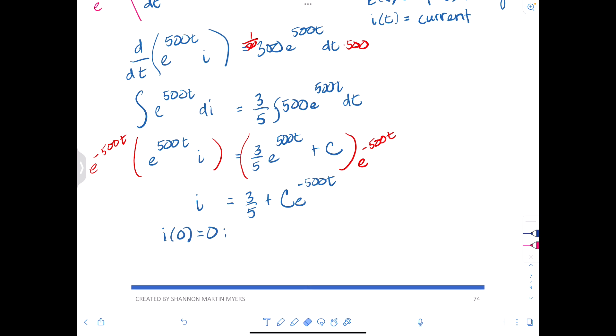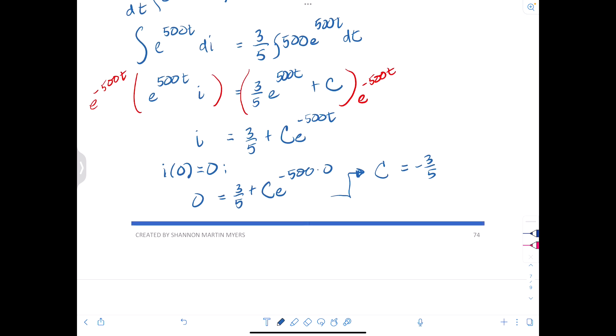So we'll get zero equals 3/5 plus C e to the negative 500 times zero, which will give us that C is equal to negative 3/5.